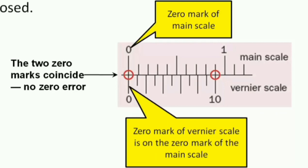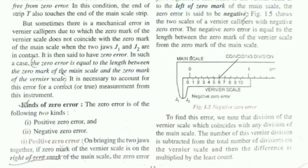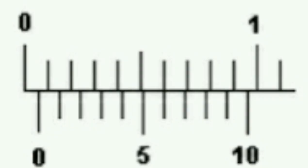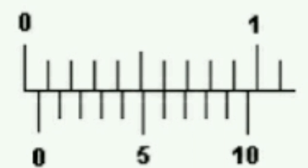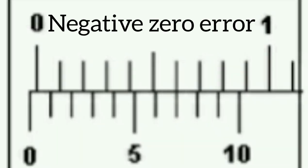This is just to check if the measurement will be accurate or not. As I told you, there are two kinds of zero error: positive and negative. Positive zero error occurs when the zero point of the vernier scale is to the right side of the zero mark of the main scale. Negative zero error occurs when the zero mark of the vernier scale is on the left side of the zero mark of the main scale.